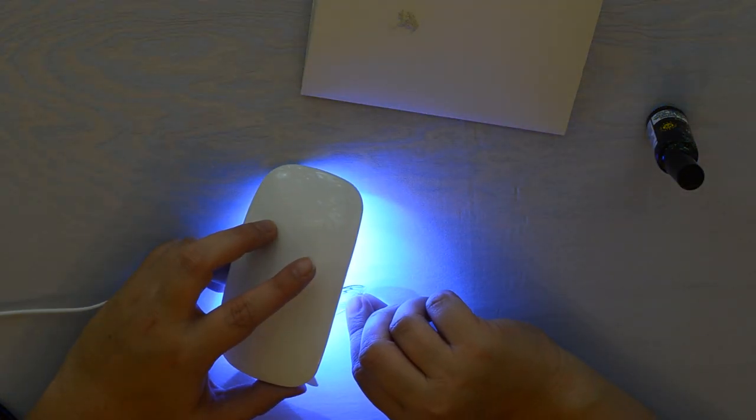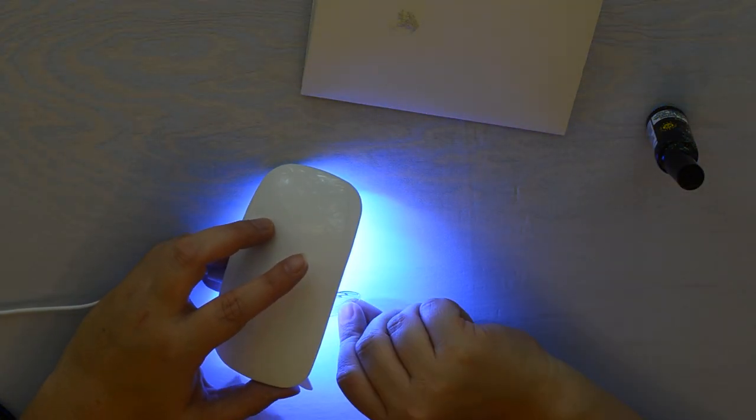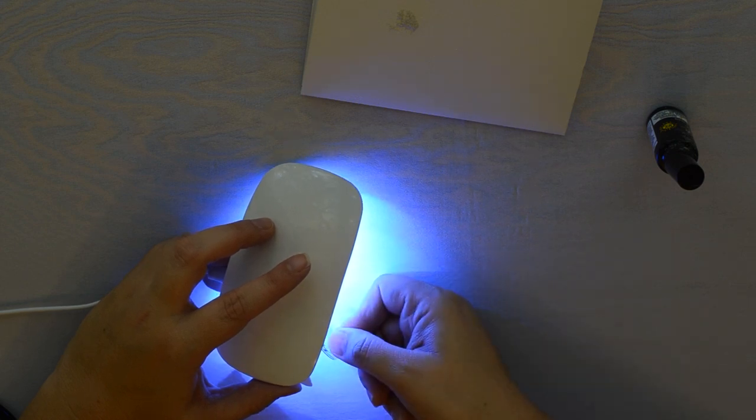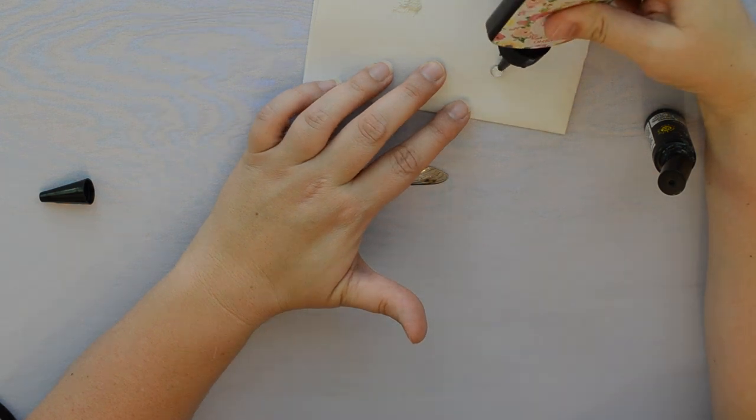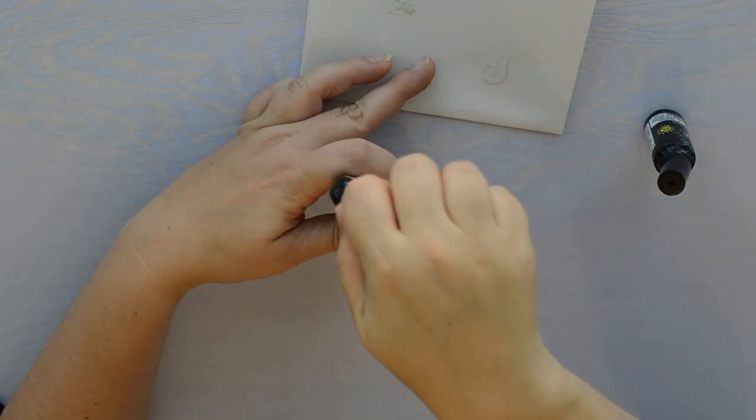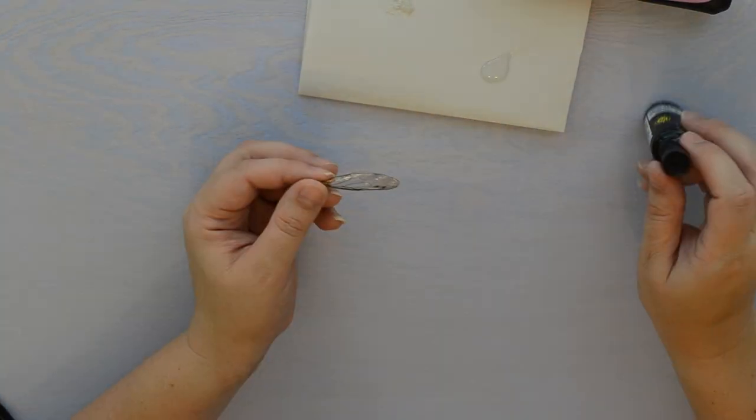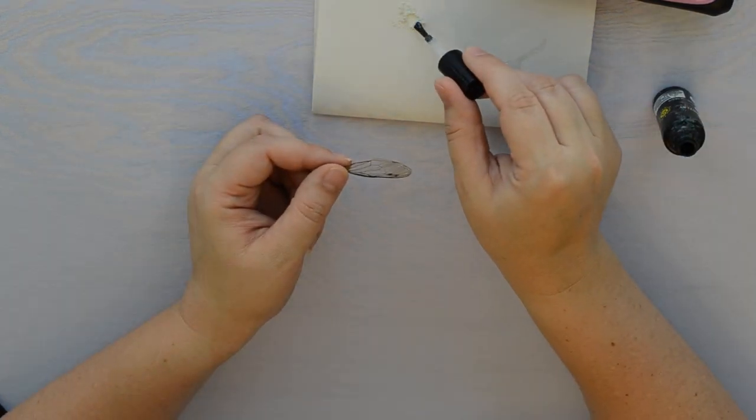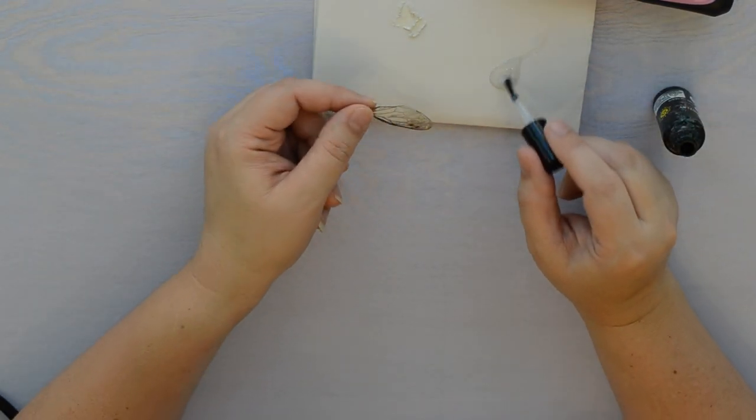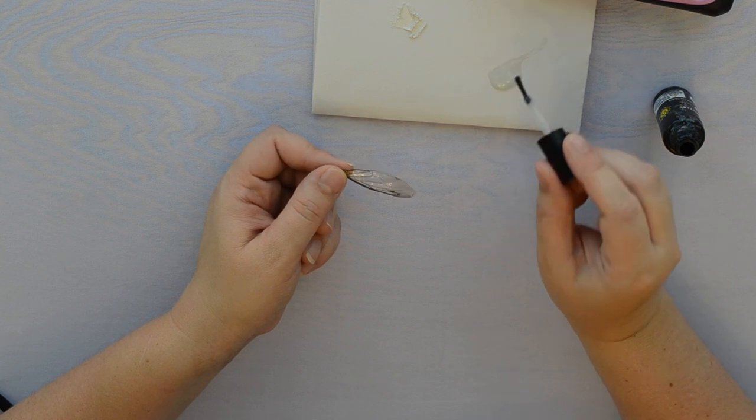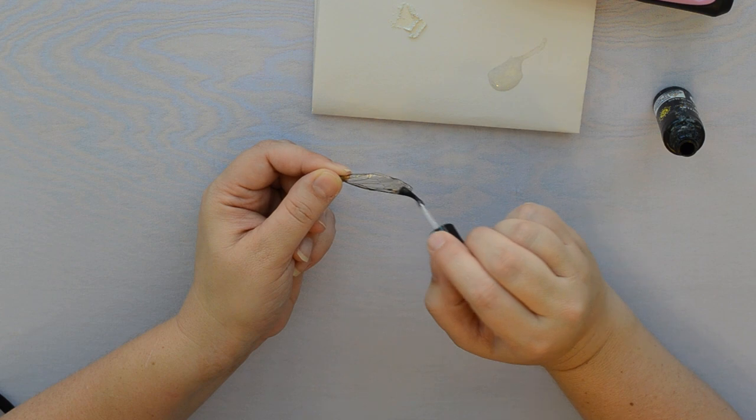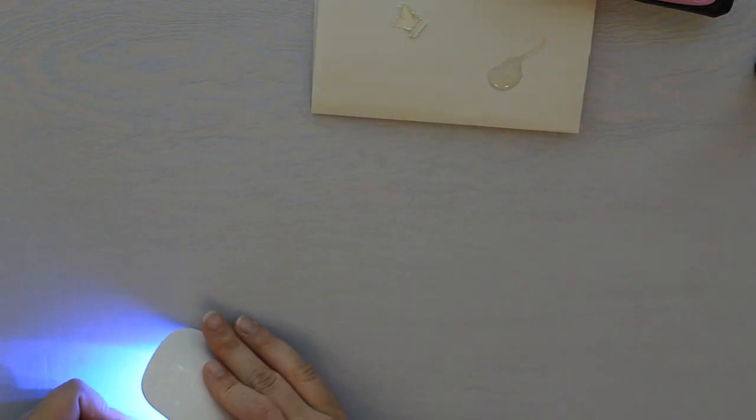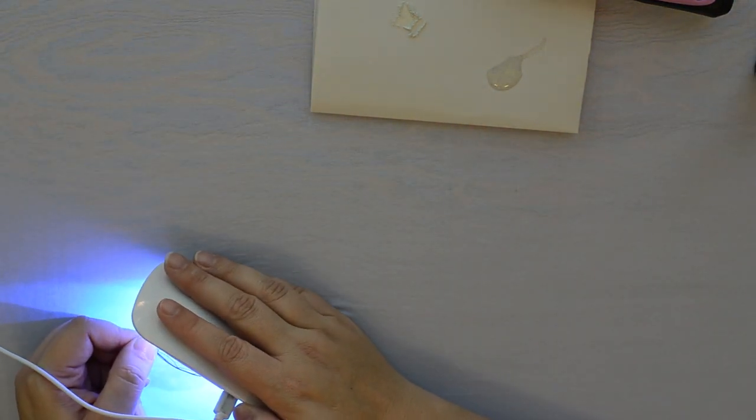Now that that first layer is dried and completed, I'm pouring a little glob of resin for the next few layers and I just like to mix in a little dab of mica powder for that extra little shimmer on the wing. We're just gonna coat each side again, drying with the UV light for 20 to 30 seconds per side.